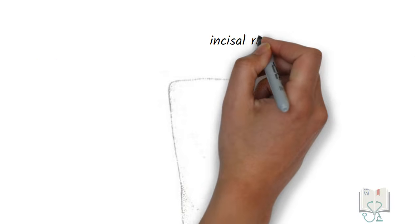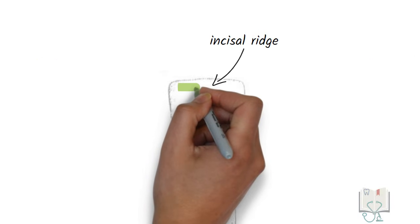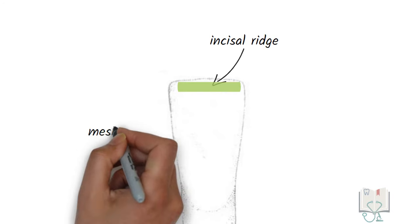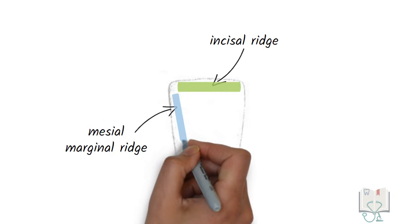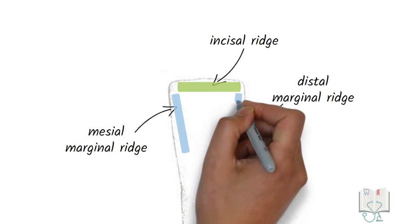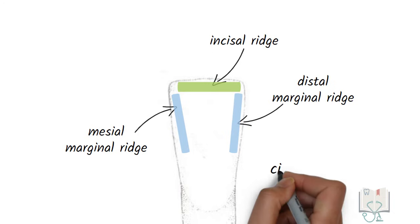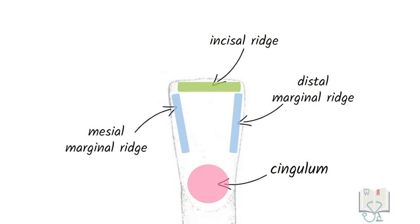Three ridges: incisal ridge running from the mesoincisal angle and distal incisal angle; mesial marginal ridge on mesial border and distal marginal ridge on distal border. A cingulum is present at the cervical third. A concavity is seen in the center of all these convexities called the lingual fossa.